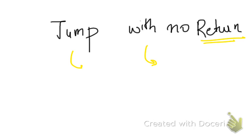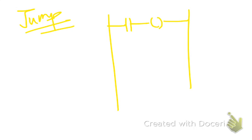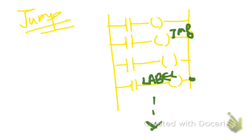Let us look at the jump function with no return. This function is really easy. For example, your main program has a number of inputs and a number of outputs — that is, a number of coils. In your ladder logic, if you want to jump from one coil to another, all you need to do is use the jump function here and create a label at the coil where you want to jump to.